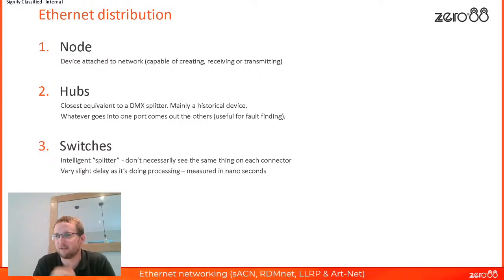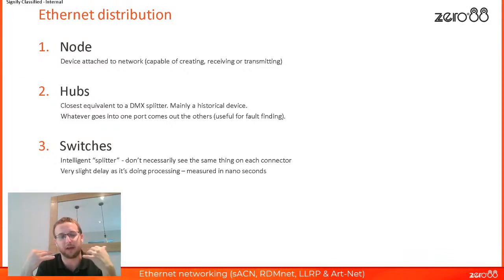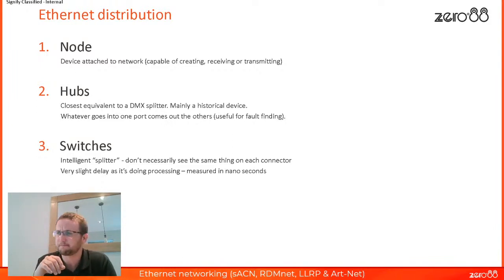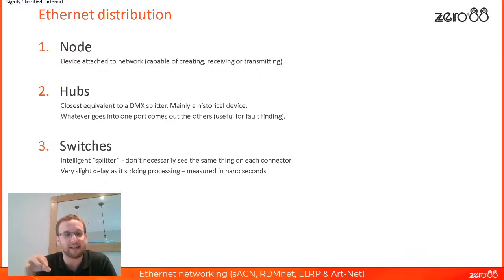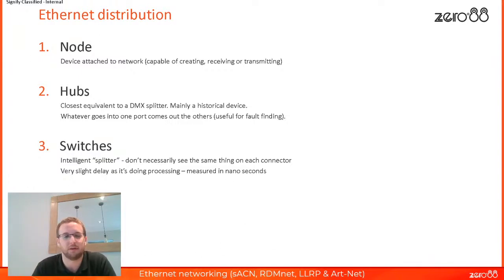A switch is an intelligent hub. It lives on the Ethernet network, so it's a type of node. When you first turn it on, it works exactly like a hub — whatever you put in one hole comes out all the other holes. But bit by bit it starts learning, listening to what's coming in and out of all the ports, and going: that message is for that particular device, and I know it's plugged into hole number seven, so I'll only send it out of that hole. This greatly reduces the amount of data flying around your network and increases your effective bandwidth.